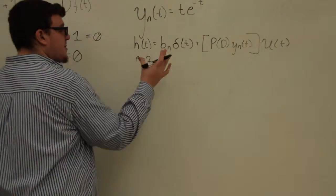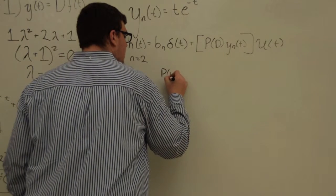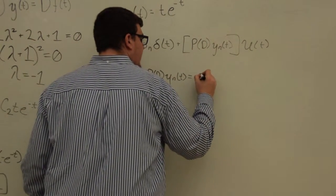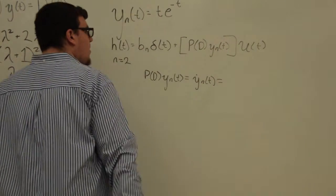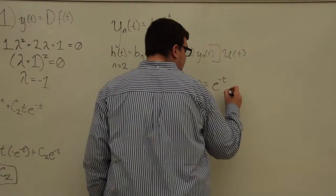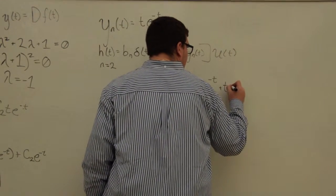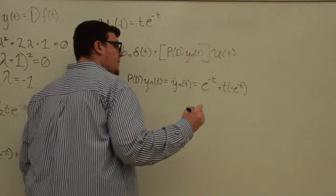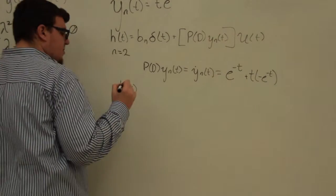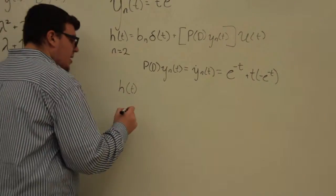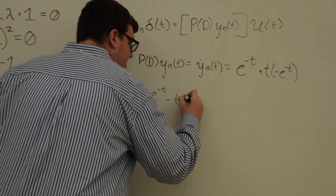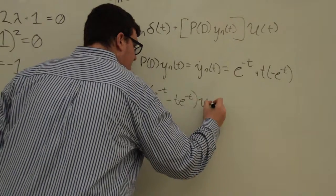Since bn is 0, the delta term drops out. P(D) applied to yn of t equals the derivative of yn of t. Taking the derivative of t e to the negative t using the product rule gives e to the negative t plus t times negative e to the negative t. Applying this into the equation, our impulse response for the system is e to the negative t minus t e to the negative t, all times the Heaviside function u of t.